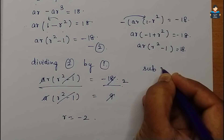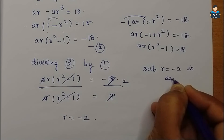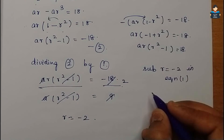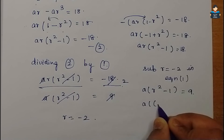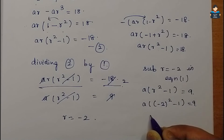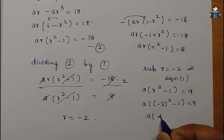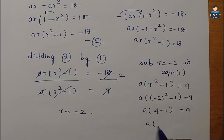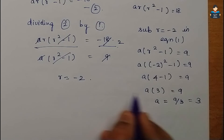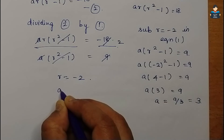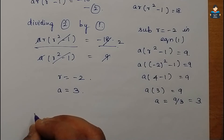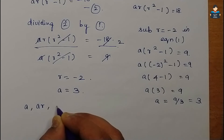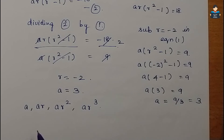Substituting r = -2 into equation 1: a(r² - 1) = 9, so a((-2)² - 1) = 9, giving a(4 - 1) = 9, so a × 3 = 9, therefore a = 3. We now have a = 3 and r = -2.